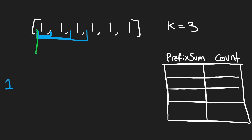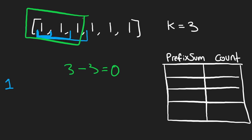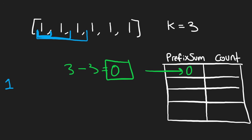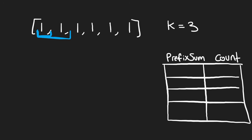There's one last edge case. If k is three and our sum is three, we take three minus three equals zero. We don't have any prefix with sum zero yet, so we'd miss it. As a base case, we add zero with a count of one to the prefix map — representing the empty prefix that has a sum of zero.